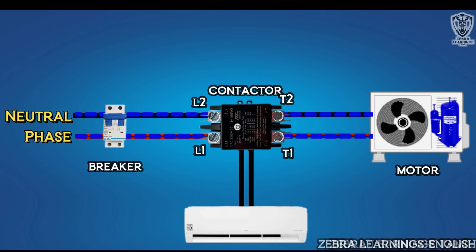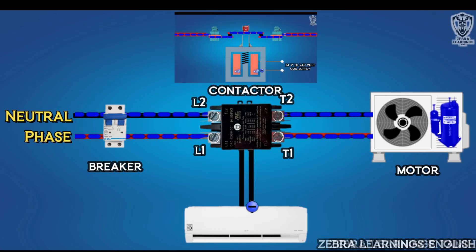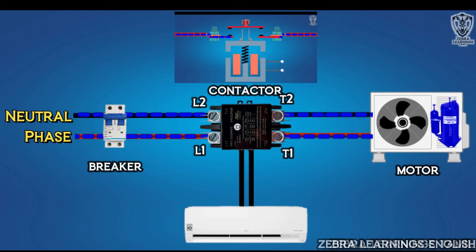After the set point is reached, the contactor de-energizes and opens, causing the power supply to be cut. Immediately, the outdoor unit will be cut off. This is the wiring connection of the contactor in the AC outdoor unit.